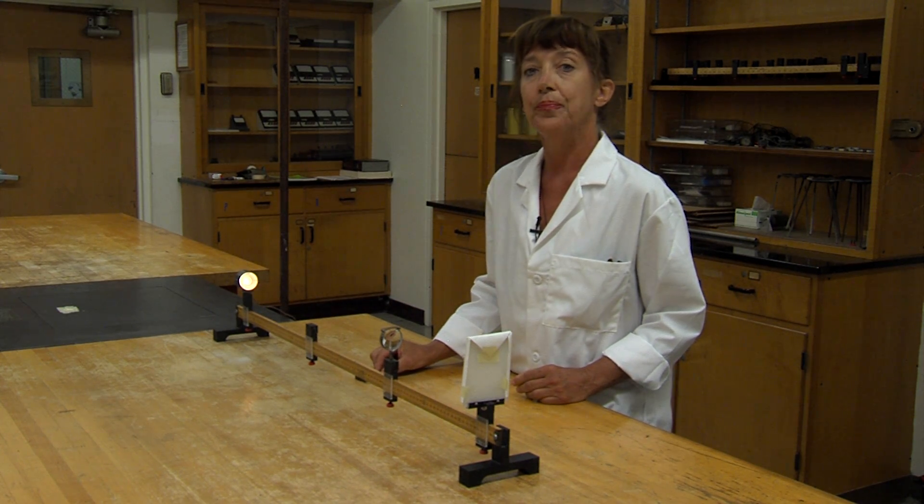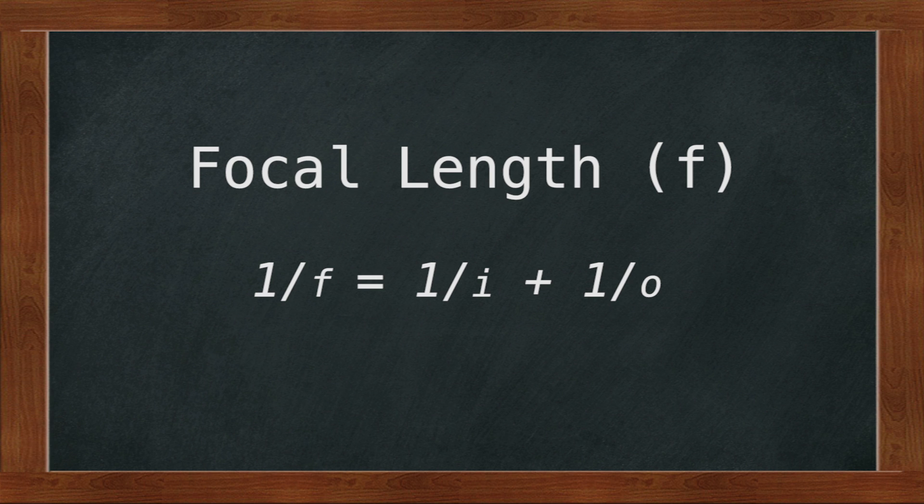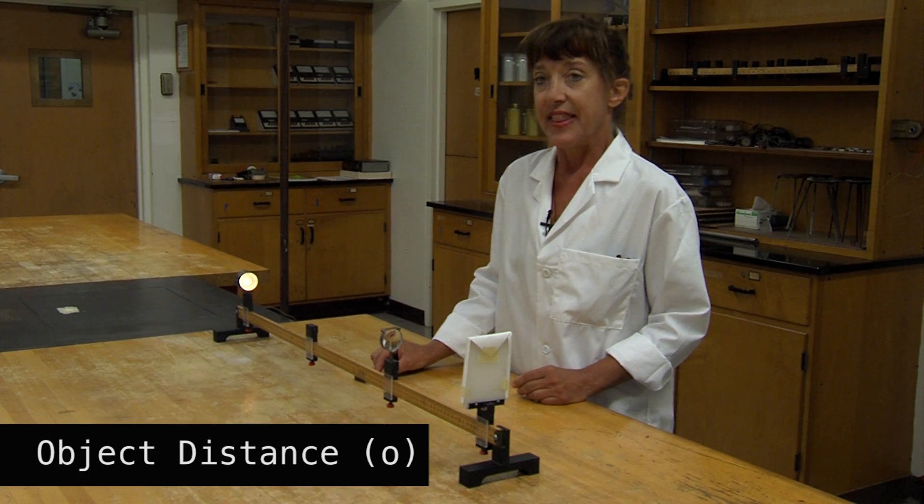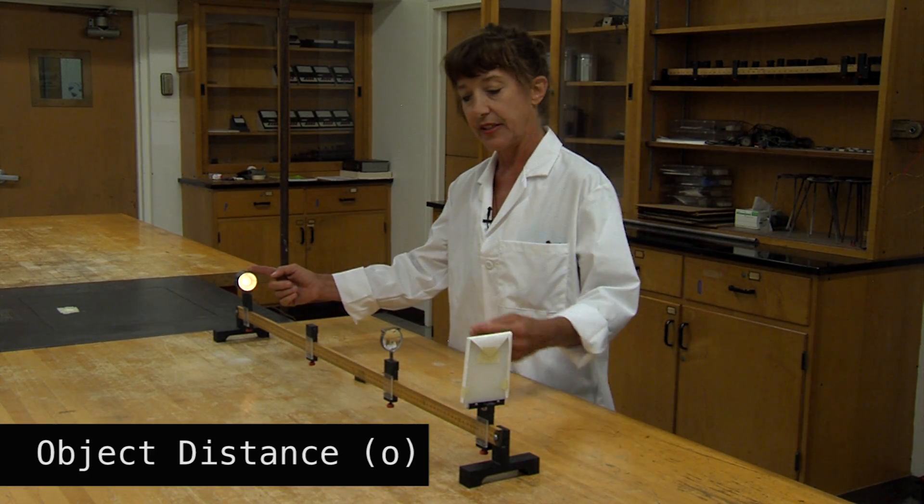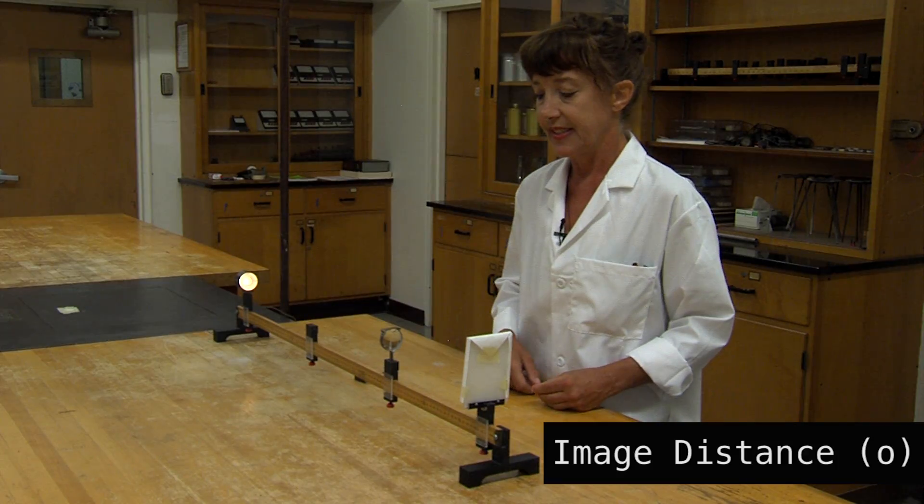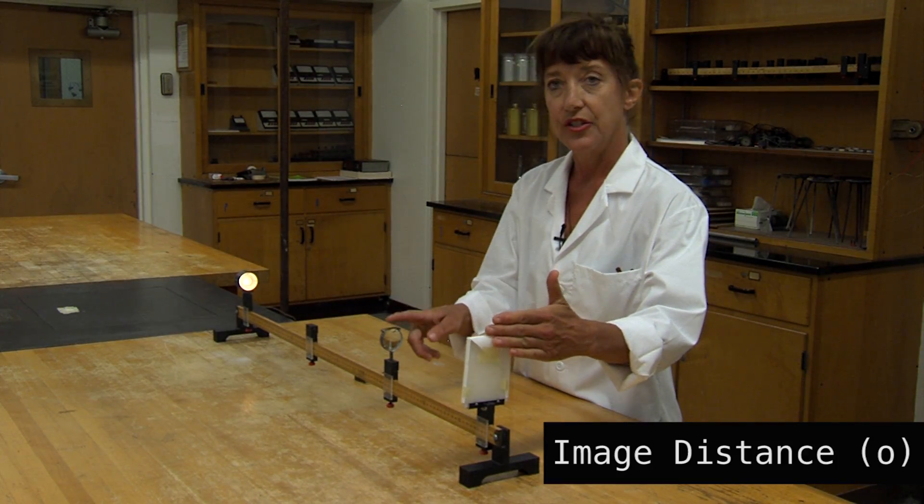To do so, we will use the lens equation, which states that 1 over the focal length equals 1 over the image distance plus 1 over the object distance. You need two values to use this equation: the object distance, which is the distance of the object to the lens, and the image distance, which is the distance of the image to the lens.